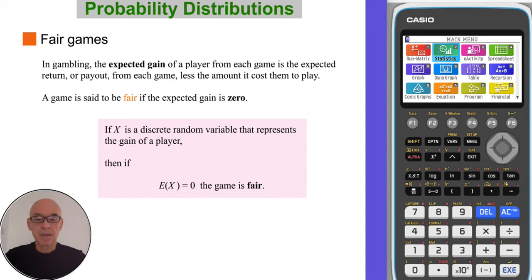So mathematically, if X is the discrete random variable that represents the gain of the player, then if E(X) is equal to zero, the gain is said to be fair.